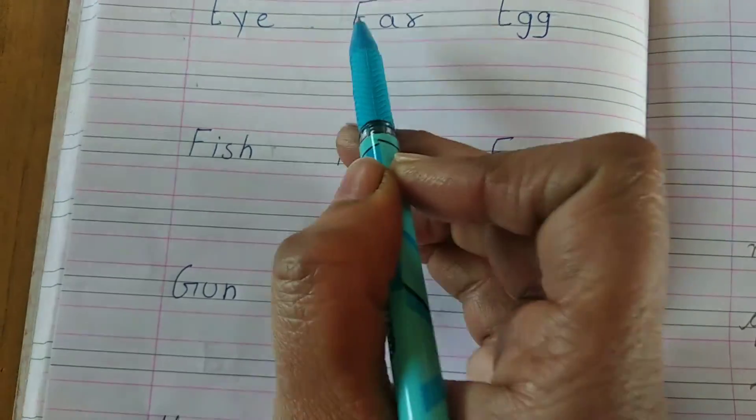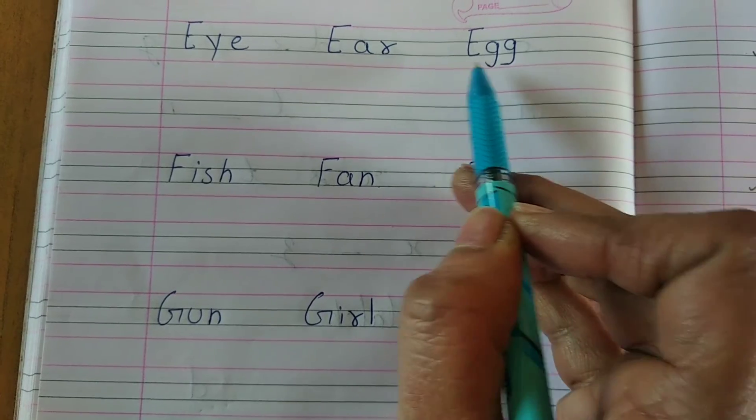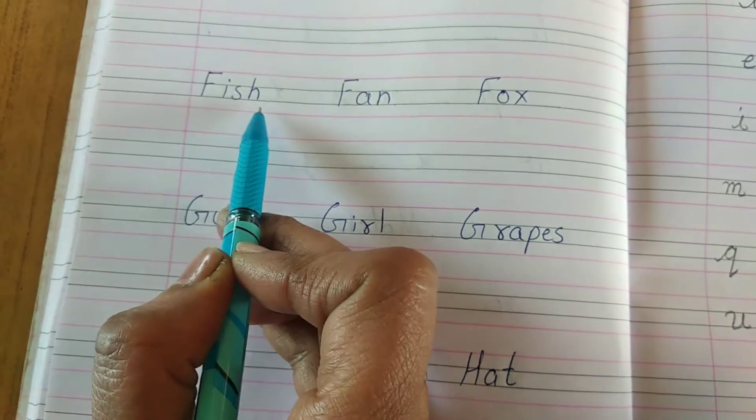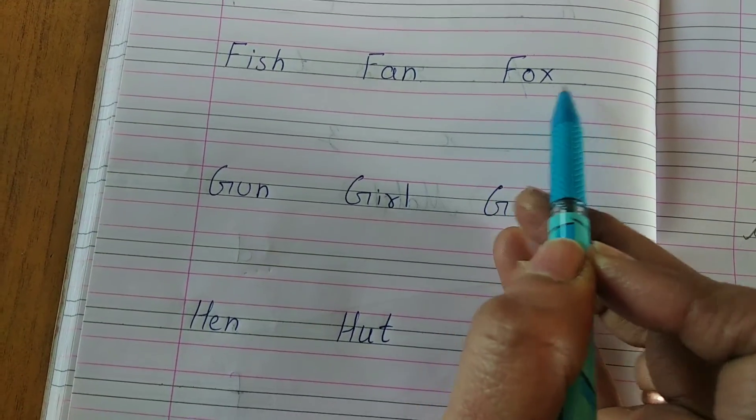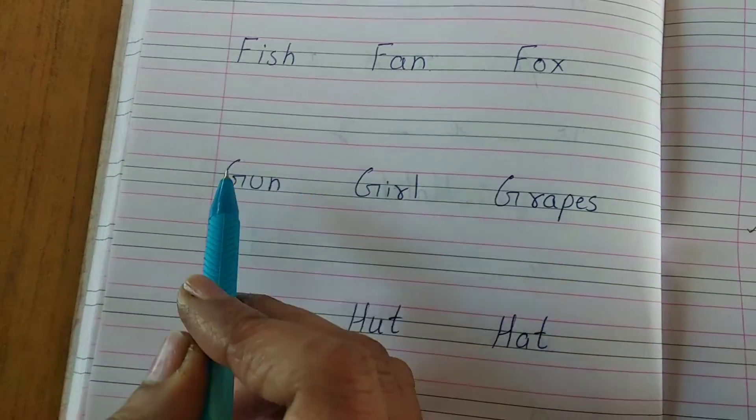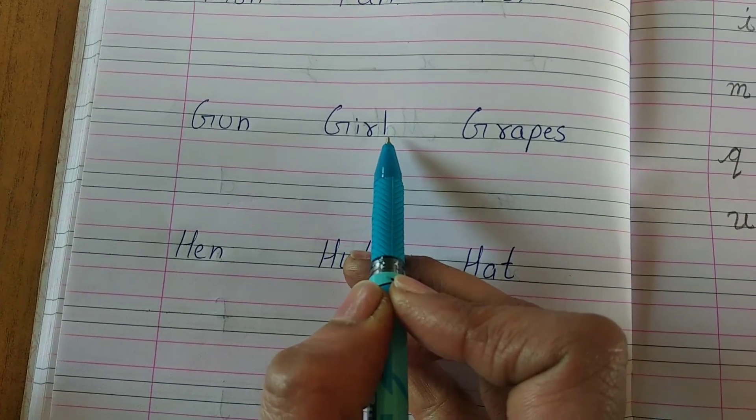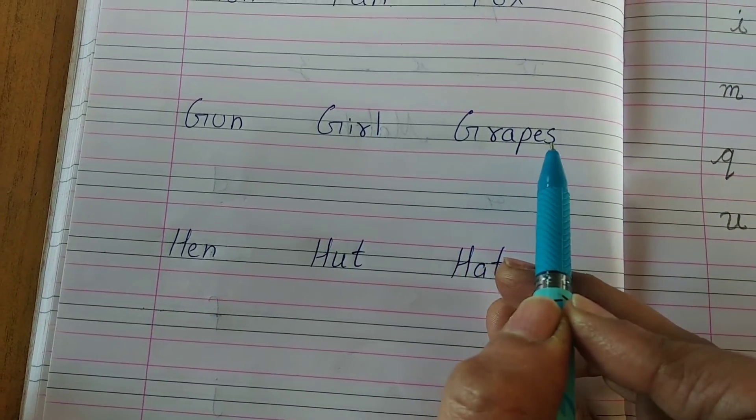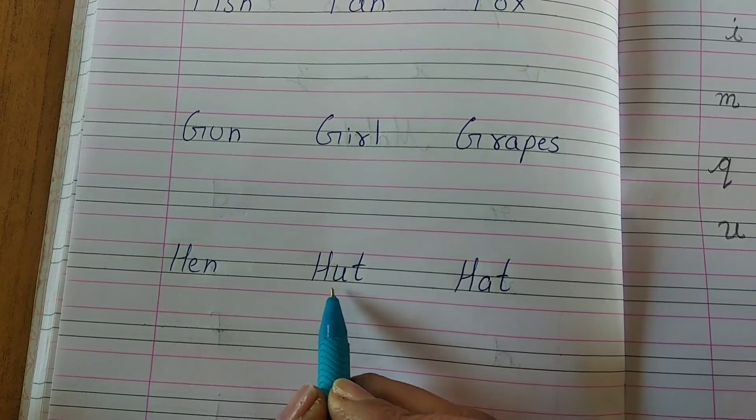Eye, Ear, Egg. Fish, Fan, Fox. Gun, Girl, Grapes. Hen, Hut, Hat, okay?